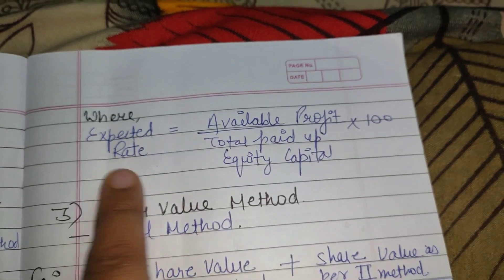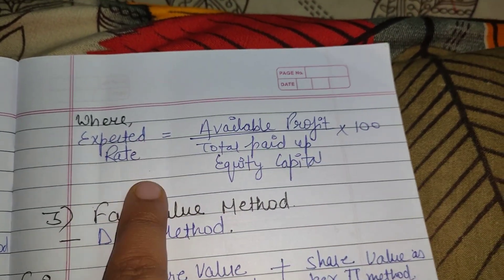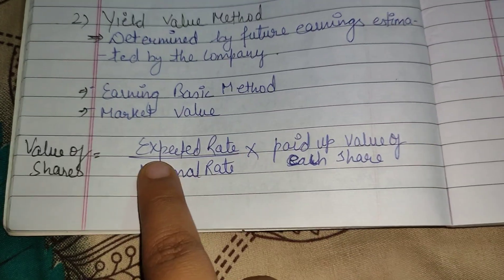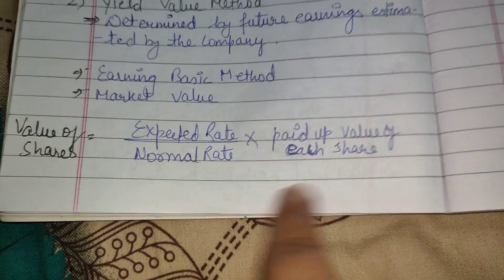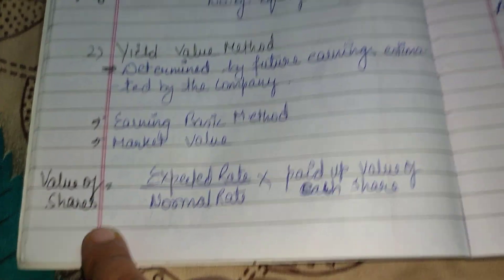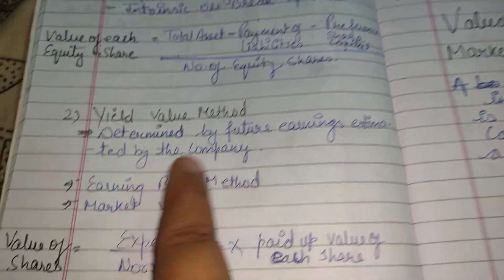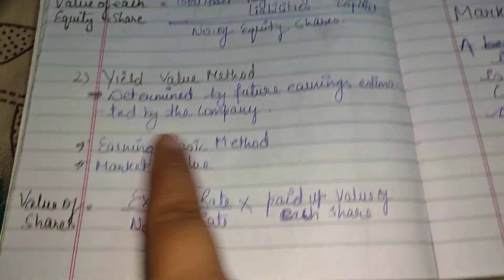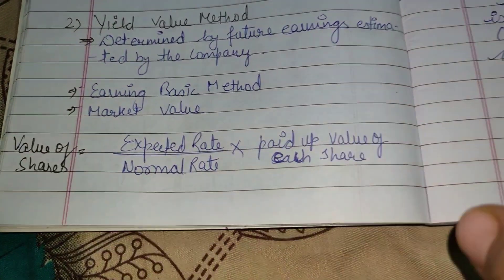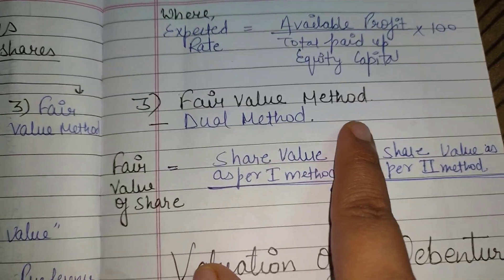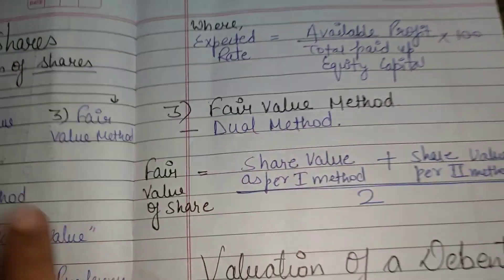Once we have the Expected Rate, we substitute it into the formula to get the value of shares using the Yield Value Method.